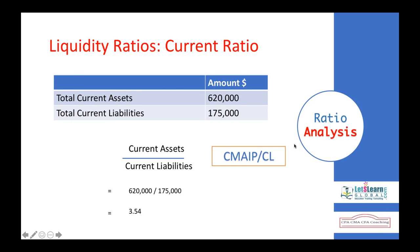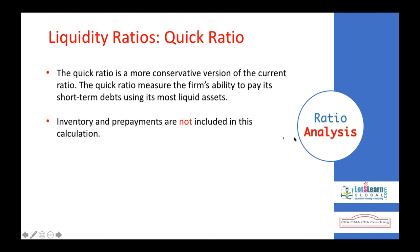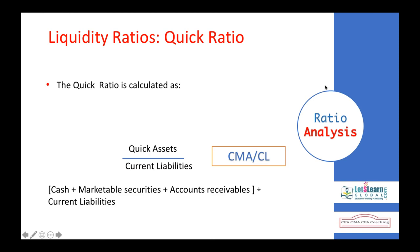The current financial position is strong. The standard norm for the current ratio is 2:1 — for every one dollar of current liability, the suggested amount of current assets is two dollars. Here we have 3.54:1. However, a high current ratio doesn't guarantee we can pay current liabilities, because most current assets might be in inventories, which take a long time to convert to cash, while current liabilities may be due today or tomorrow. Prepayments also cannot be converted to cash.